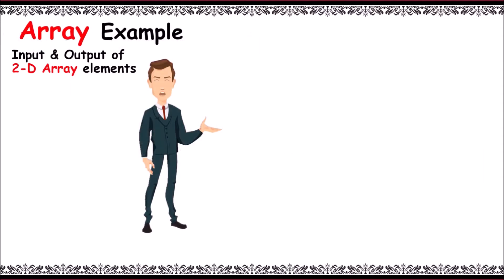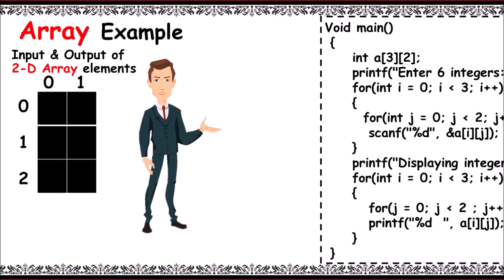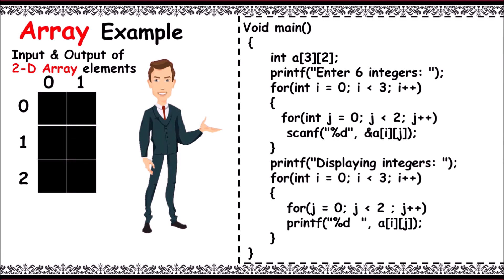Next, 2D array example to print 6 elements. Let's declare 2 dimensional integer array a[3][2]. Printf prompts us to enter 6 integers. The outer for loop acts as row, i equals 0 indicates first row.